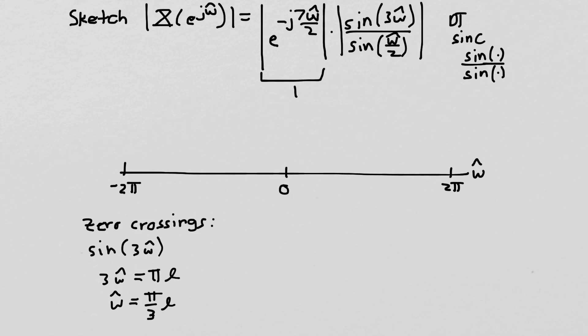If we look at the denominator, the denominator will go to zero when the denominator is sine omega hat over two, and that goes to zero when omega hat over two is a multiple of pi, or omega hat is a multiple of two pi. That is one way to remind us that this whole expression we know is a discrete time Fourier transform. So it's got to be periodic with period two pi. So we expect some repetition with two pi.